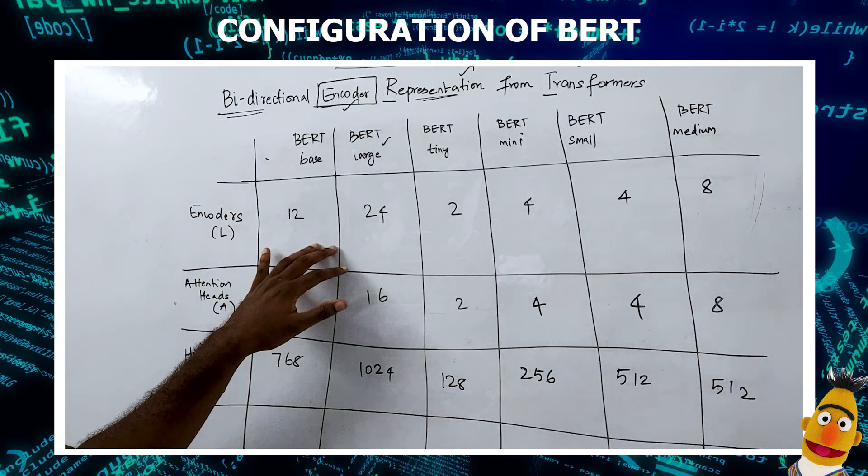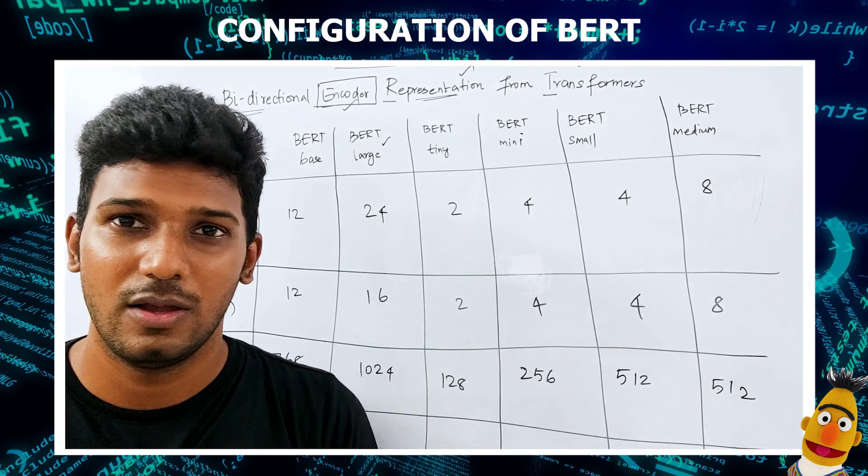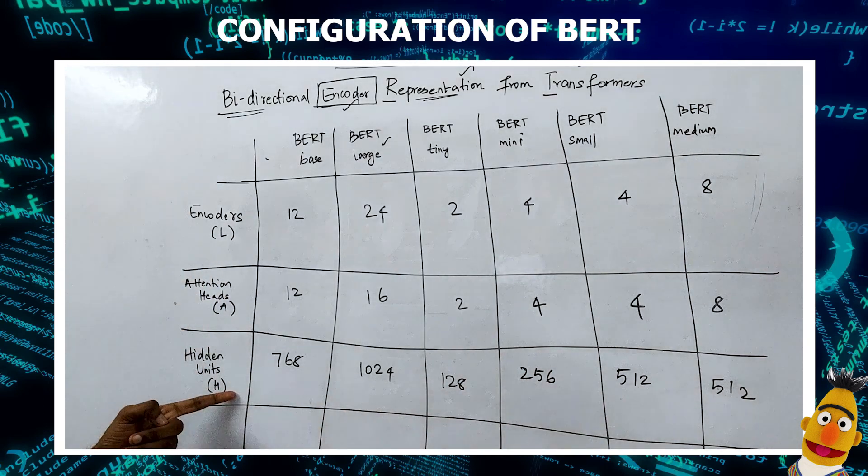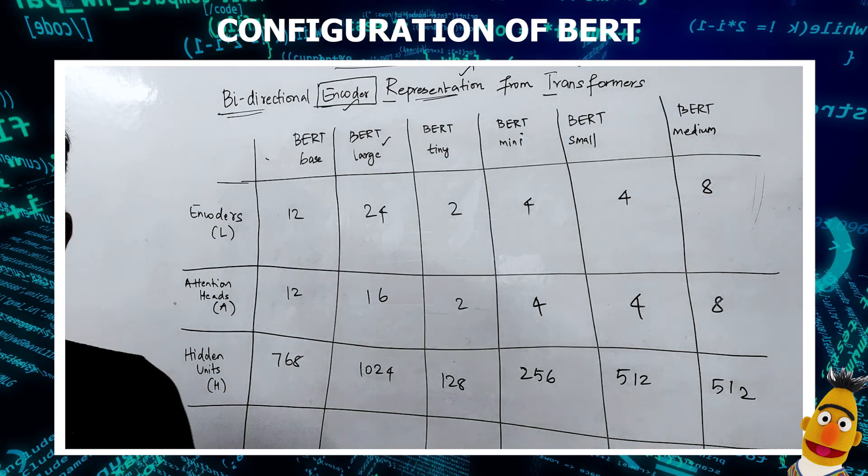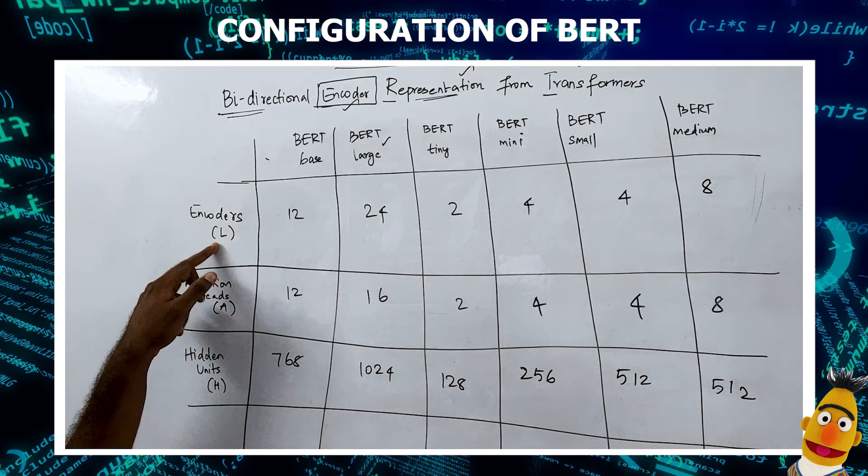These are the most widely used configurations. In libraries like Hugging Face you can see these variations indicated with the letters L, A, and H. If you see H having 512, it means the number of output neurons in the feed forward layer is 512. Similarly for attention heads and encoders.